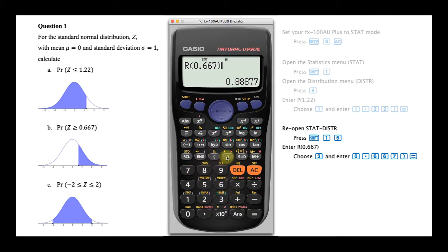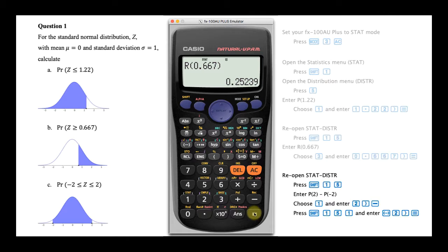Close the brackets and press equals. Our answer is 0.25239. To perform our final calculation, once again reopen the statistics distribution menu by pressing Shift and then 1 and then 5. Choose the P calculation.